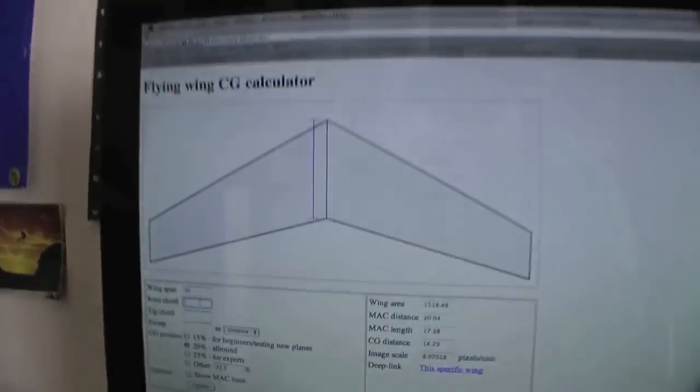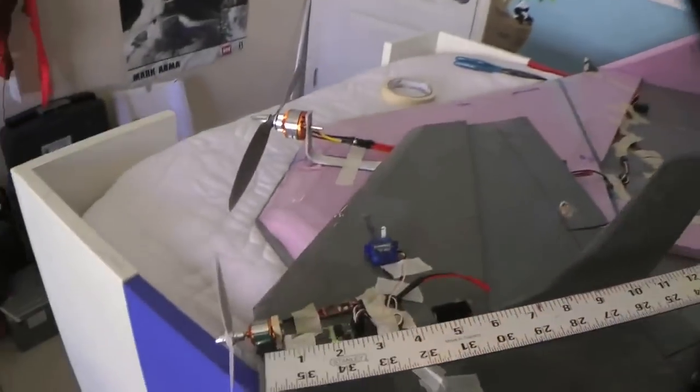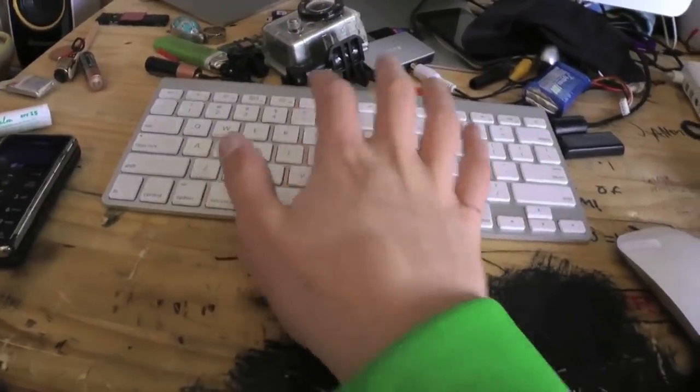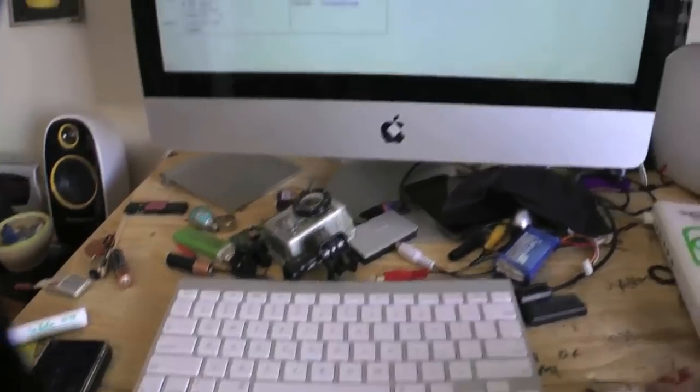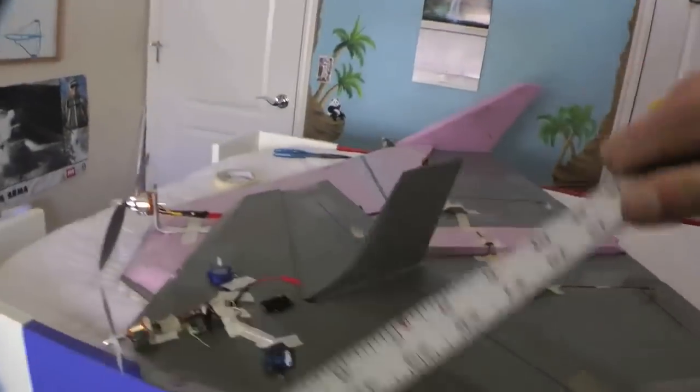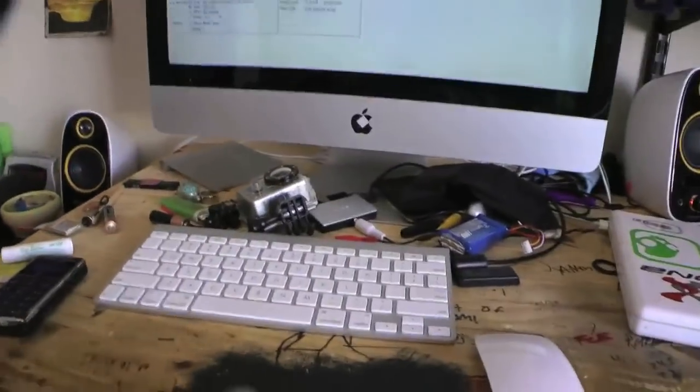The root chord now. See, it shows you. The root chord is right there. So, looks like this is 13.5 inches. One, three, point five. Tip chord. It'll show you. Tip chord is right there. Tip chord looks like it is seven inches. Put that in, seven.